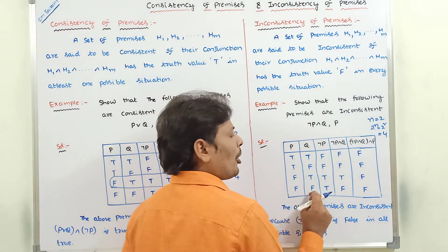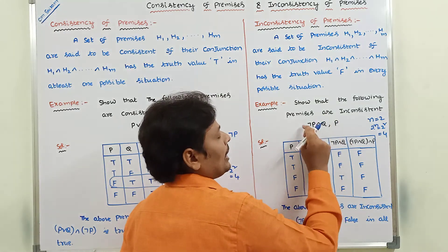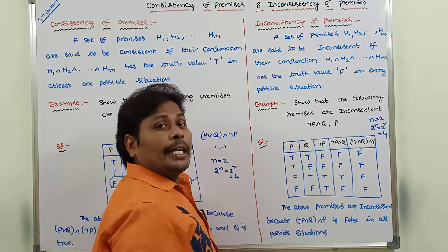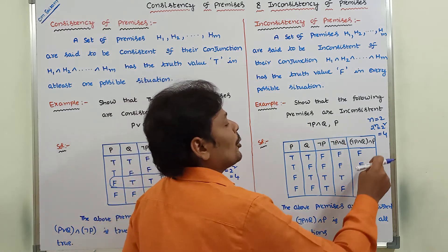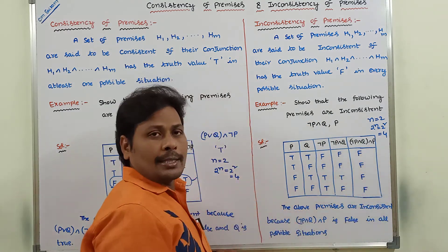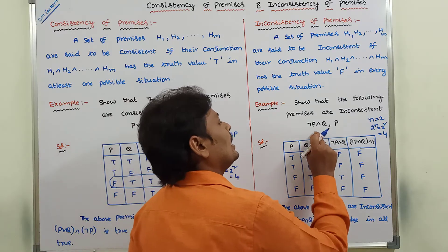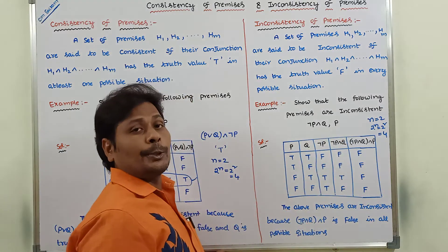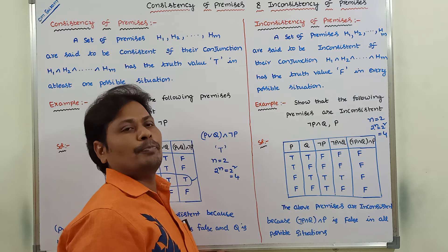In all possible situations, the conjunction of the given premises contains only the truth value false. Hence we can say that these premises are said to be inconsistent.